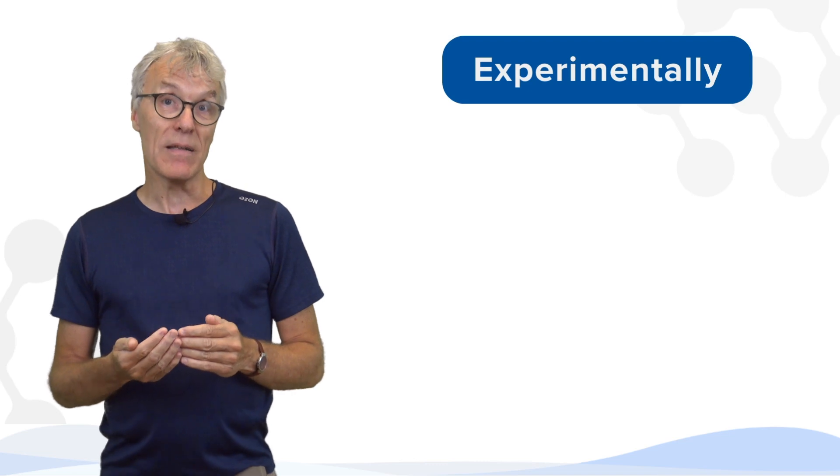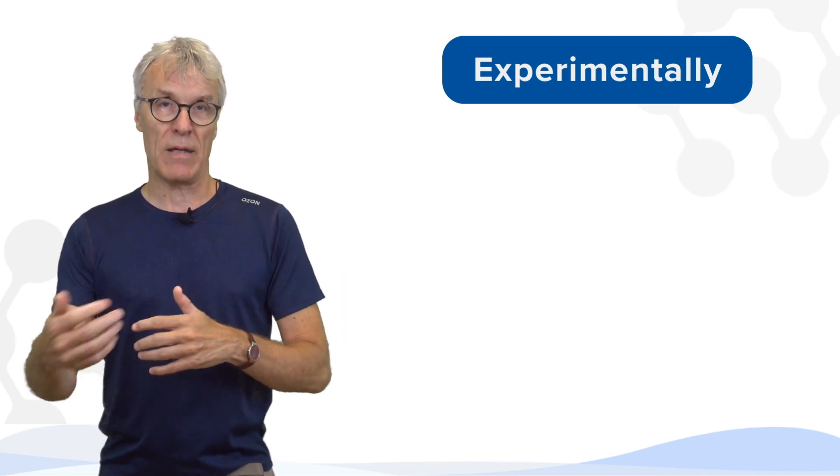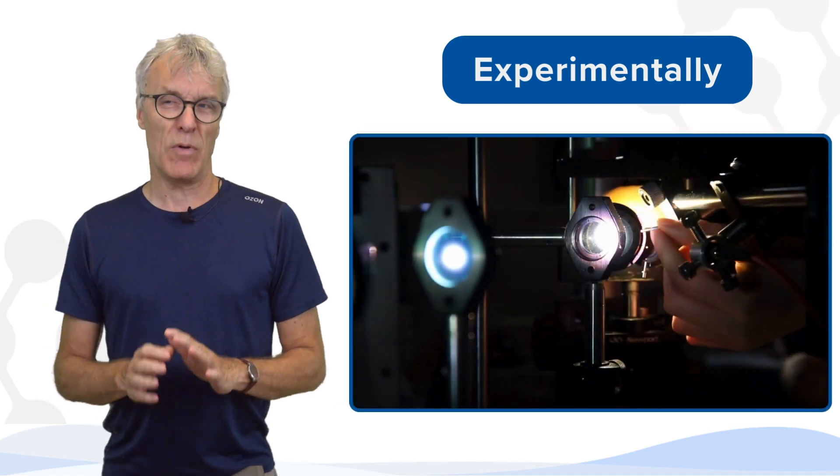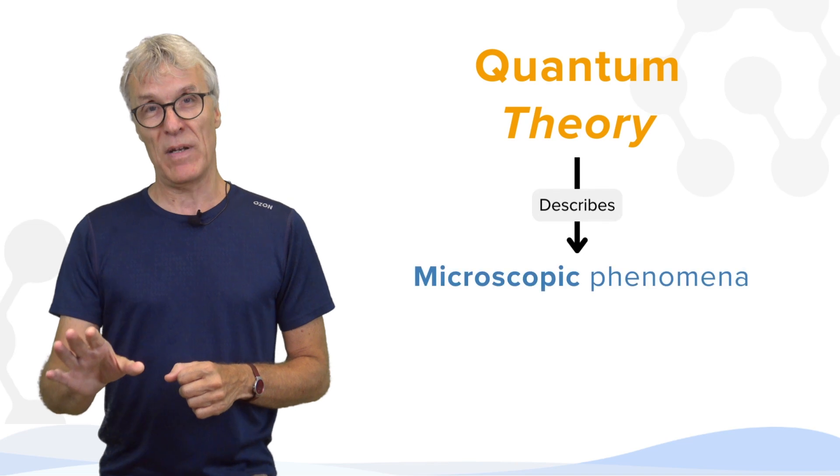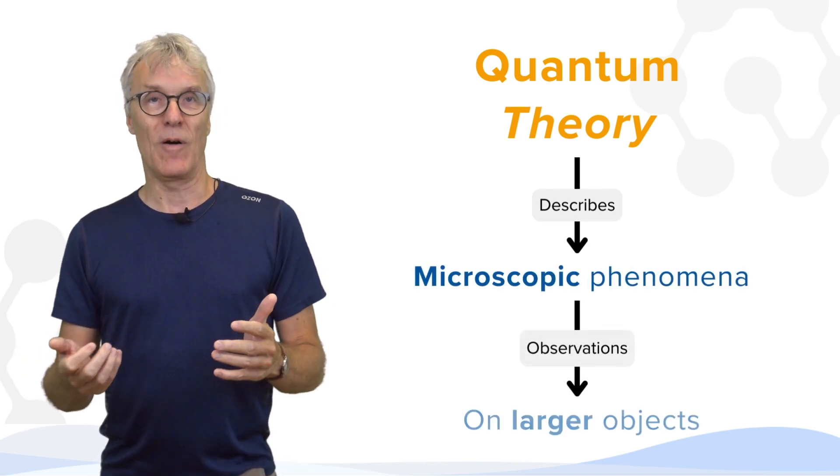Experimentally, I already mentioned that we are looking at the light coming from stars. We're also looking at a lot of objects in the laboratory. And what was characteristic is that the quantum theory describes microscopic phenomena, but the observations we made are typically on larger objects.